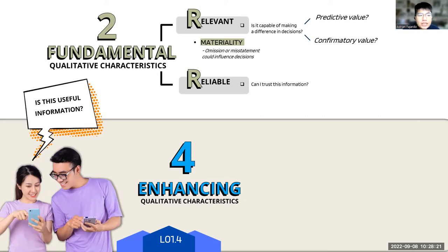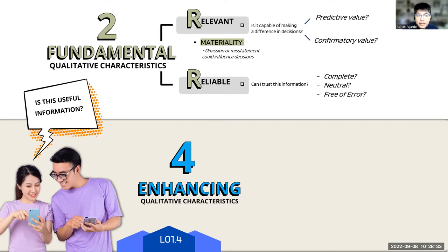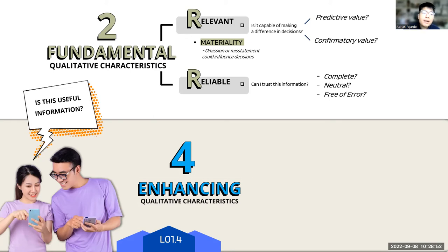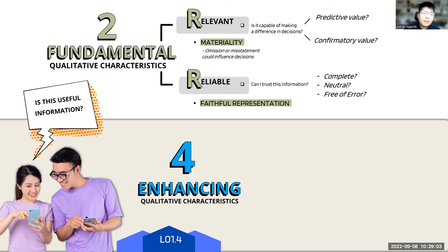For information to be reliable, you ask yourself three things: is it complete — is all necessary information there? Is it neutral — free from bias and not manipulated? And is it free of error — are the computations and statements correct? If you have information that is complete, neutral, and free of error, you can confidently say it is reliable. And if it is reliable, it has faithful representation of the economic events happening in the business.